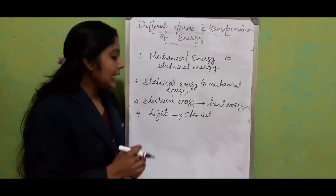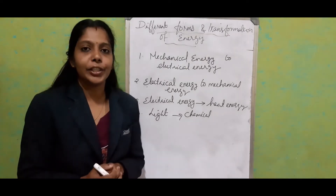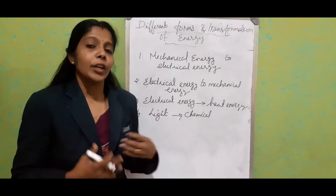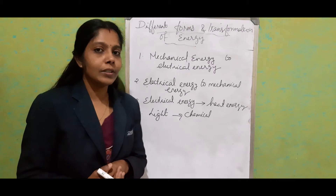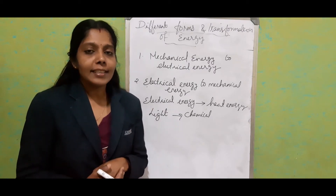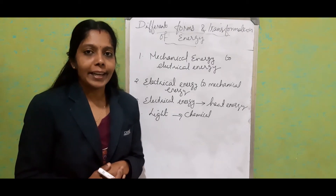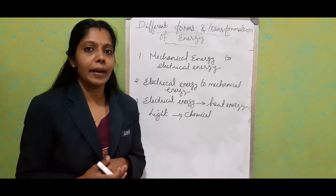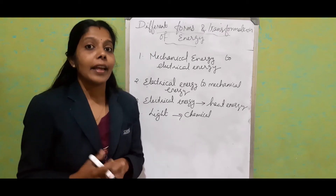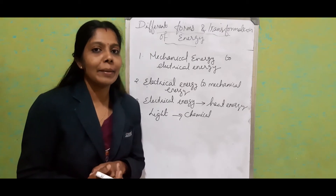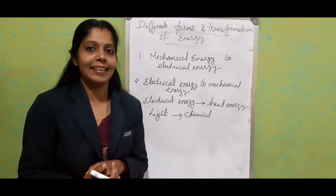Next one is light energy to chemical energy. During photosynthesis, the green plants absorb light energy from the sun and prepare food. That food is stored in the form of chemical energy.